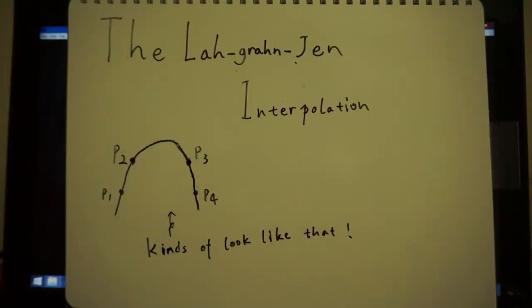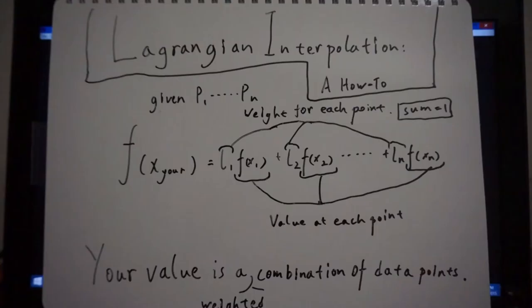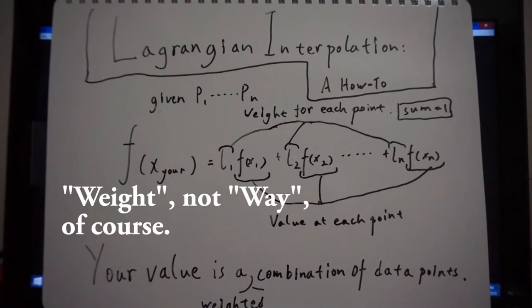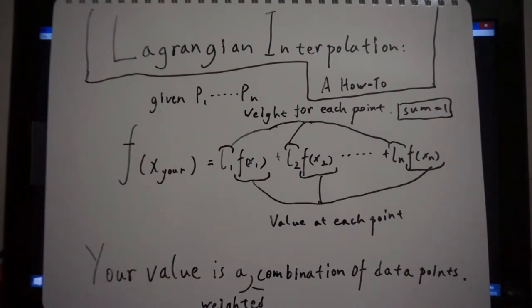The Lagrangian interpolation is just another way, and this time, the curve you draw will actually pass through those data points. Let's see how it works. Here's the formula. It's basically saying we'll give a weight to each data point you have, and we'll add them all up.